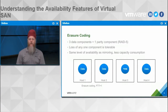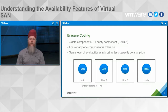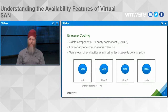Another concept is erasure coding, which is equivalent to something like a RAID 5 from an availability standpoint. With erasure coding configured for failures to tolerate equals one, we end up with three data components and a parity component. In addition, we would also have a witness component, so we can end up with an odd number of components to resolve split-brain scenarios.